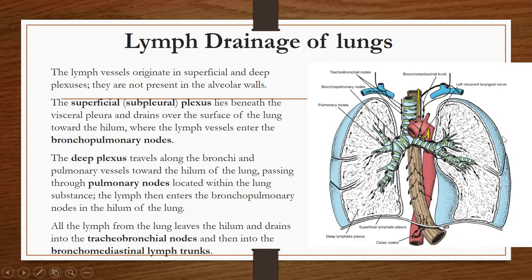The lymphatic drainage of the lungs involves vessels originating in two types of plexus: one is the superficial plexus and one is the deep plexus. They are not present in the alveolar wall. The superficial plexus is also called the subpleural plexus because it lies just beneath the visceral pleura. It drains over the surface of the lung toward the hilum, where the lymph vessels enter the bronchopulmonary lymph nodes.